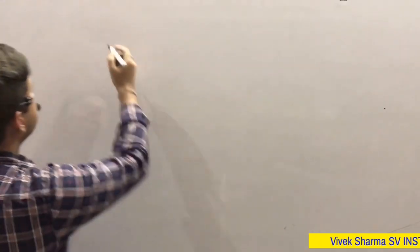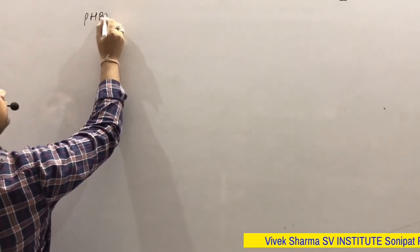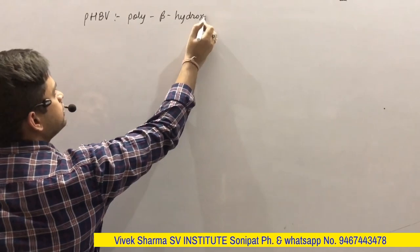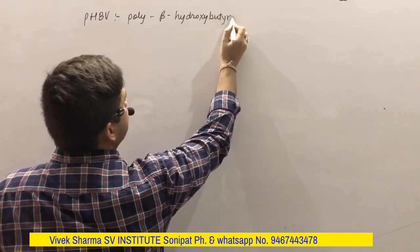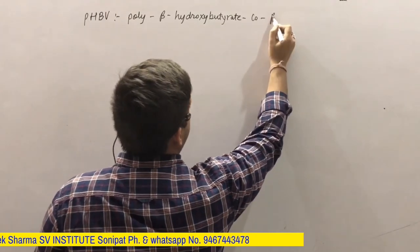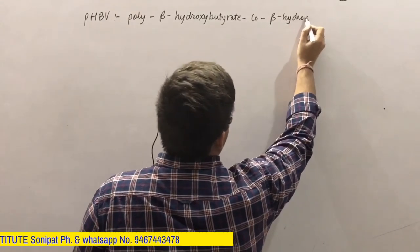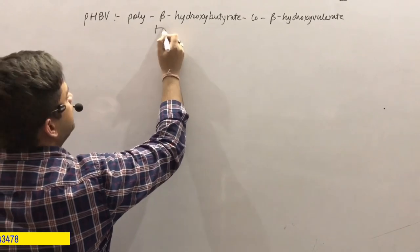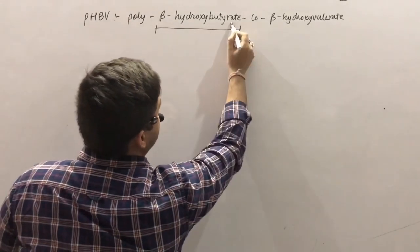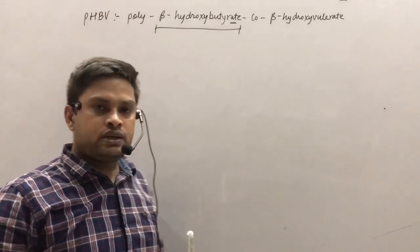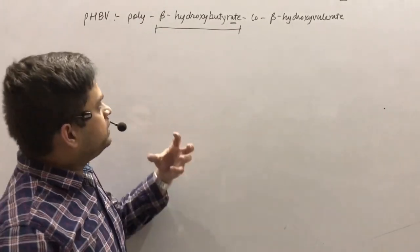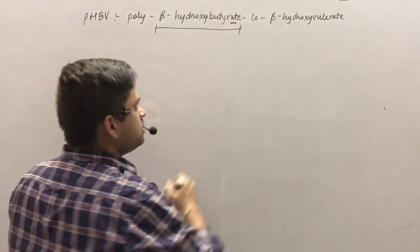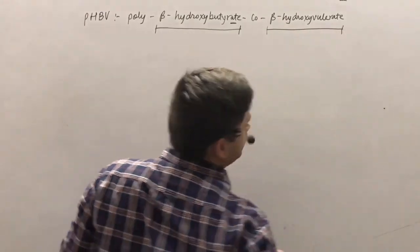The next polyester is PHBV, that is poly-beta-hydroxybutyrate co-beta-hydroxyvalerate. The two monomers are beta-hydroxybutyric acid and beta-hydroxyvaleric acid. Note that the suffix '-ate' is used for an ester — when a carboxylic acid is converted into an ester, the suffix '-ate' is used.